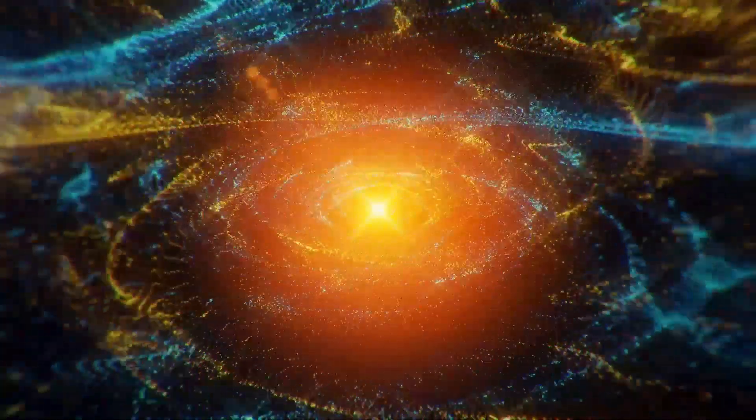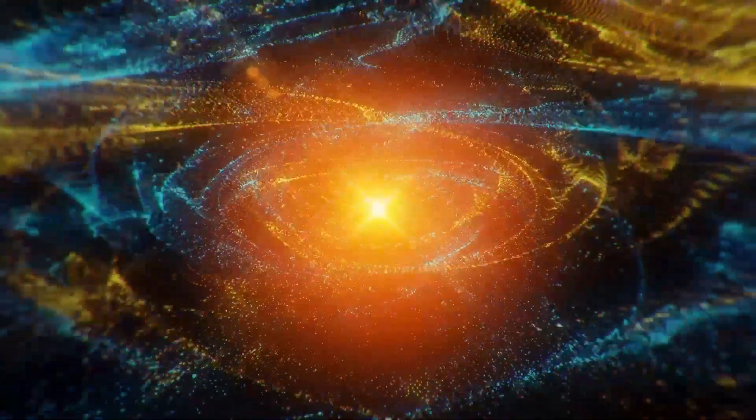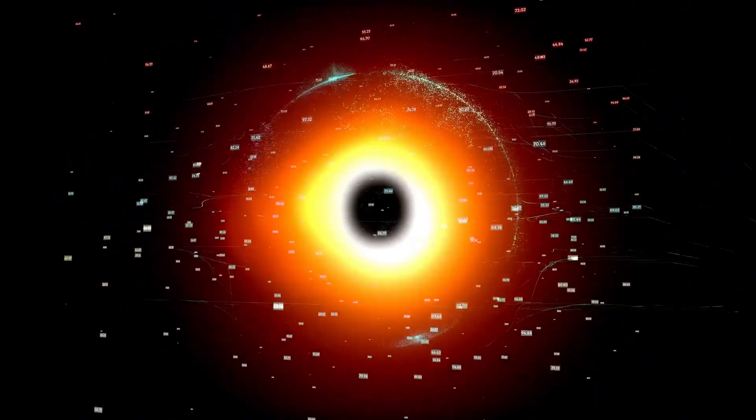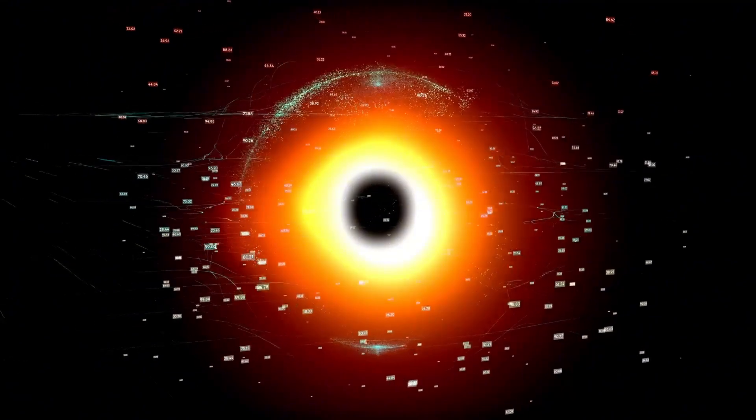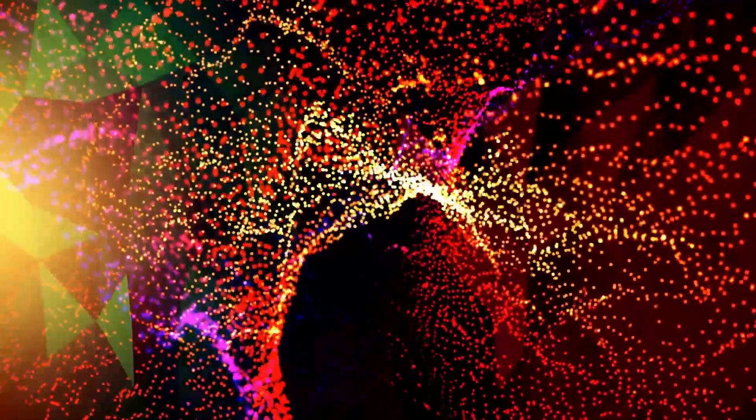Unlike most stars, Betelgeuse changes in brightness over time due to its proximity to our system. Named a semi-regular variable star, its brilliance fluctuates consistently, moving toward a potential great breakdown in a supernova explosion. Recently, Betelgeuse has become even more captivating due to surprising variances in brightness.